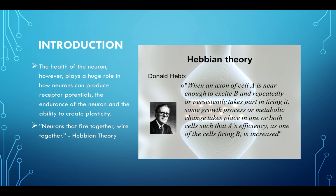The health of the neuron plays a huge role in how neurons can produce receptor potentials, the endurance of the neuron, and the ability to create plasticity. Neurons that fire together wire together — that's the Hebbian theory. Donald Hebb said when an axon of cell A repeatedly takes part in firing cell B, some growth process or metabolic change takes place in one or both cells such that A's efficiency at causing B to fire is increased.